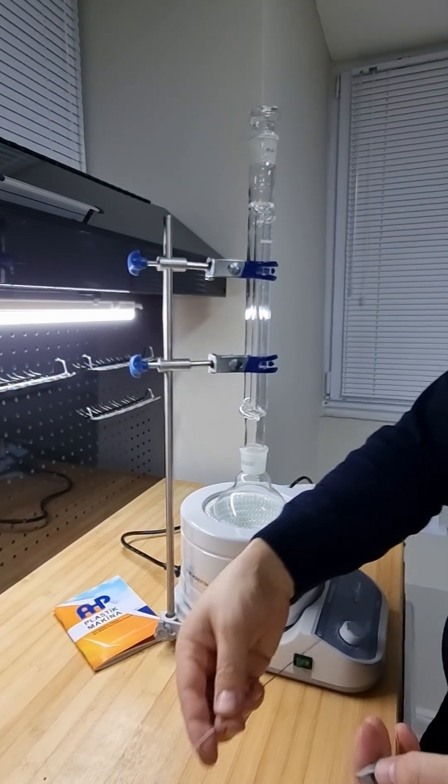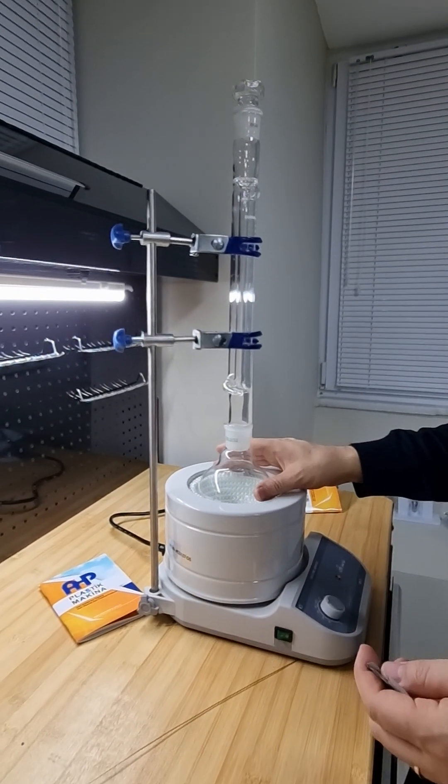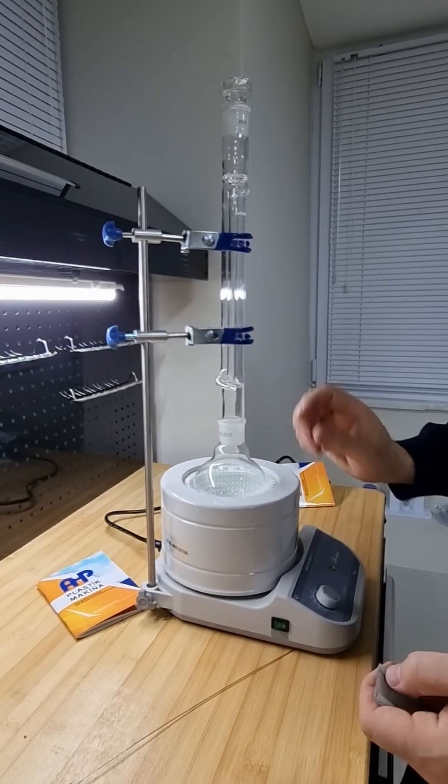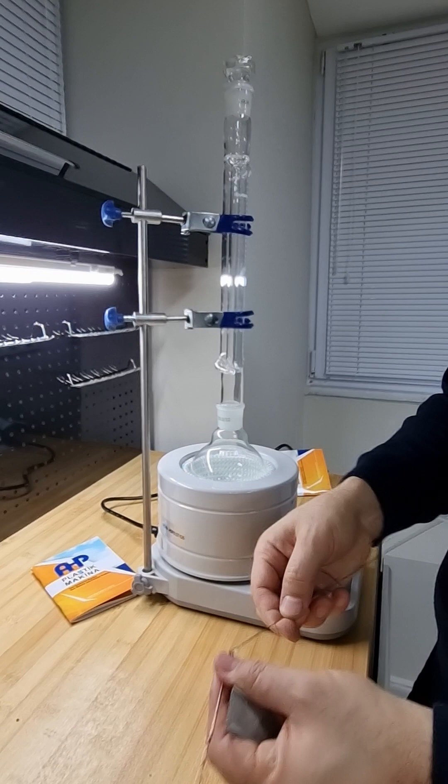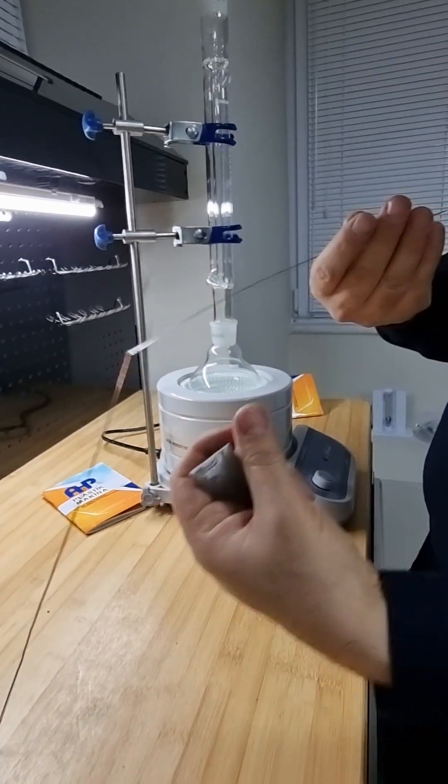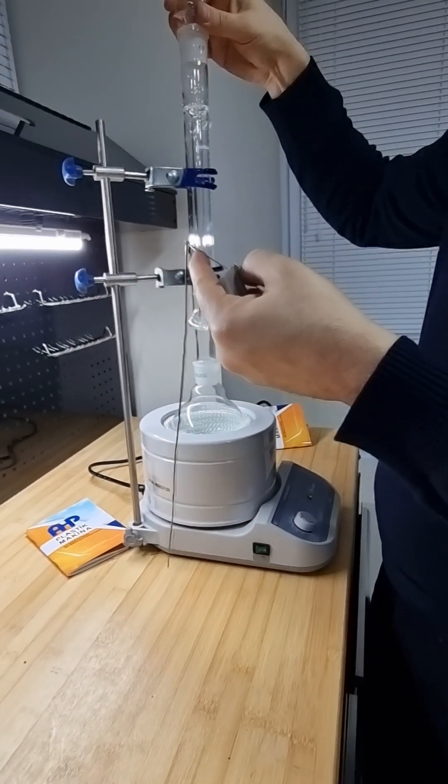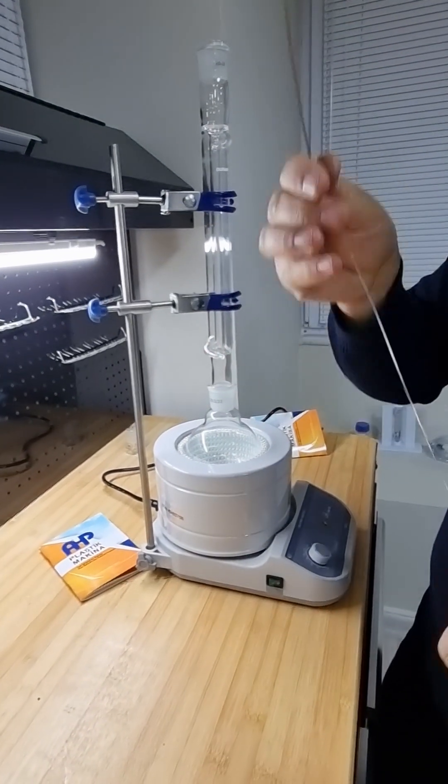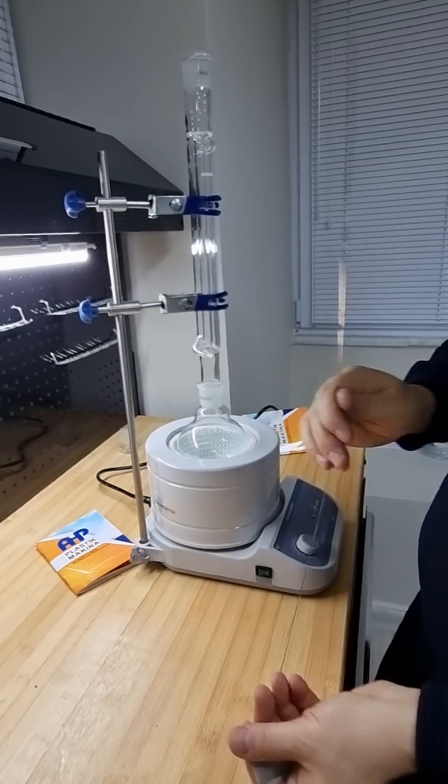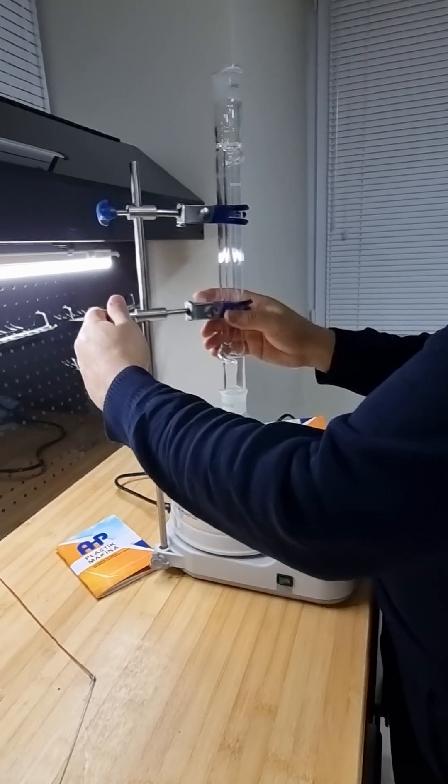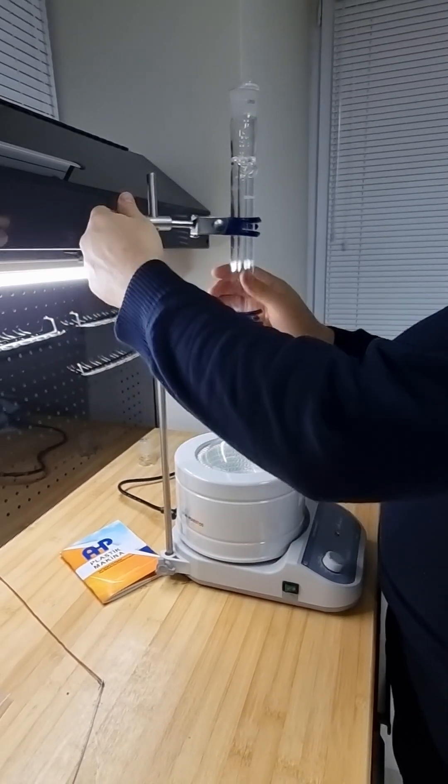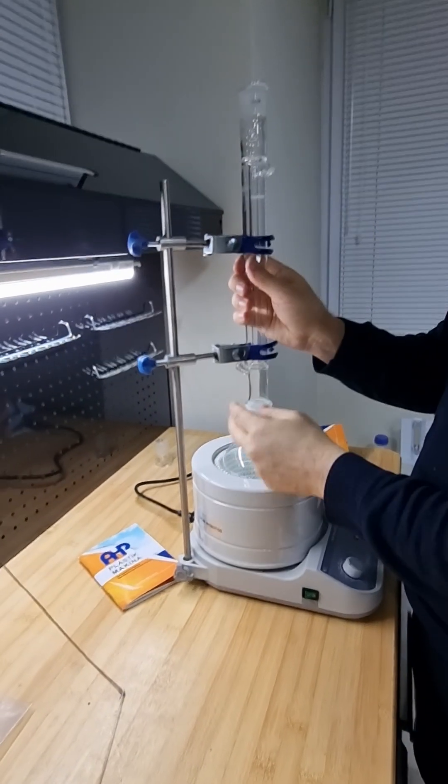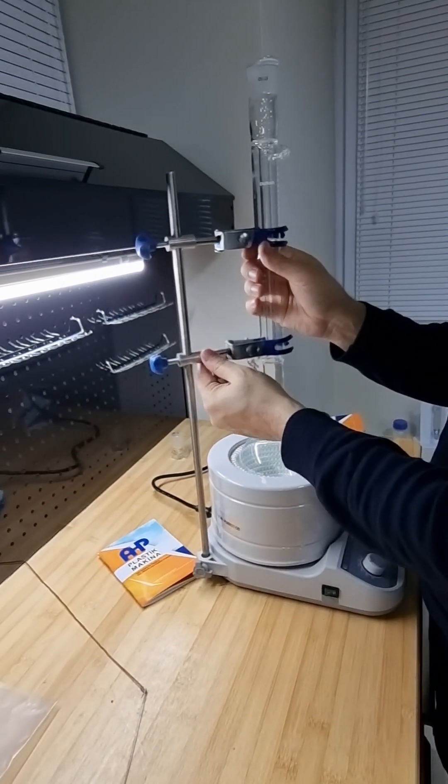After that, you will fill the flask with xylene - that is the solvent for polyethylene. This is the sample holder. You need to pass this sample gripper through the condenser column. It will be working like this.